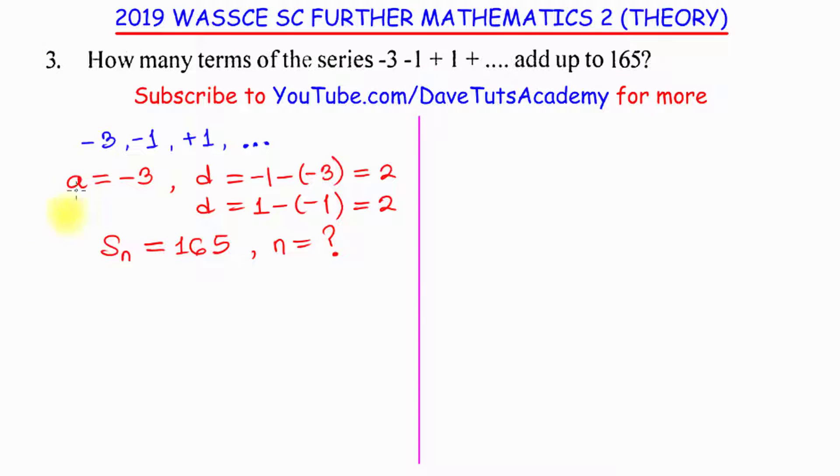Now, the question is, what is the formula for evaluating the sum of some terms in an arithmetic progression? That sum, Sn, is given as n over 2 multiplied by 2A plus n minus 1 multiplied by the common difference, D.